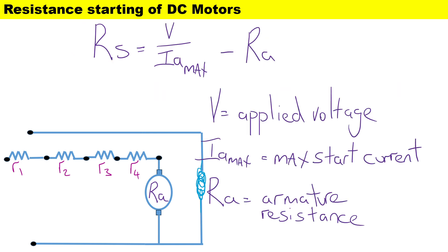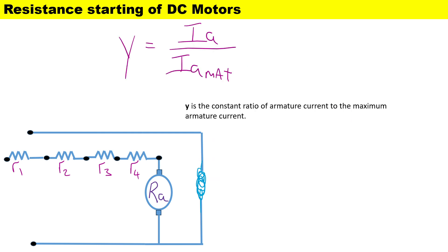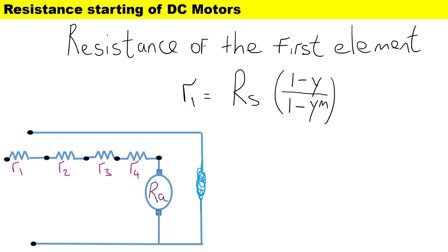To calculate the total starting resistance, it is V over Ia_max minus Ra. V is the applied voltage, Ia_max is the maximum starting current, and Ra is the armature resistance. Y is the constant ratio of the armature current to the maximum armature current.